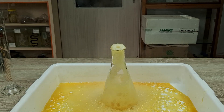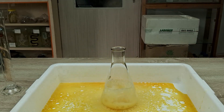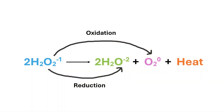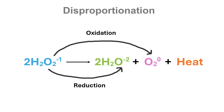The chemical equation for the catalytic decomposition of hydrogen peroxide can be simplified as shown here. The decomposition of hydrogen peroxide is in fact an example of a special type of redox reaction known as a disproportionation reaction, wherein a single reactant compound undergoes both oxidation and reduction to form one oxidation product and one reduction product.